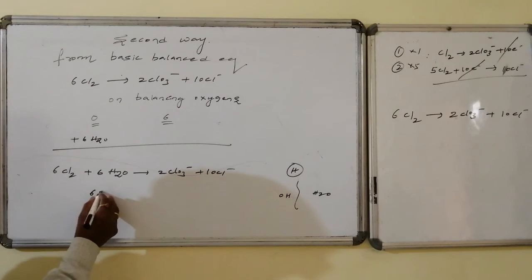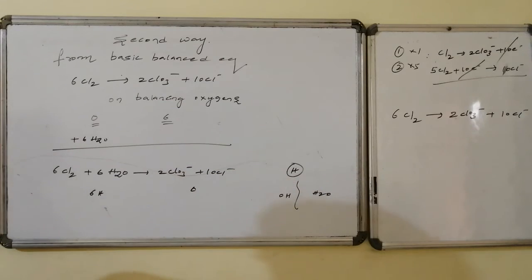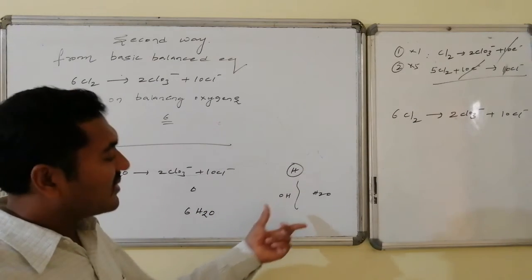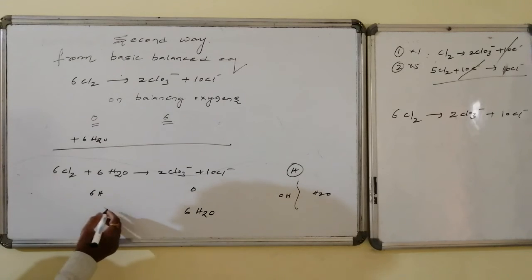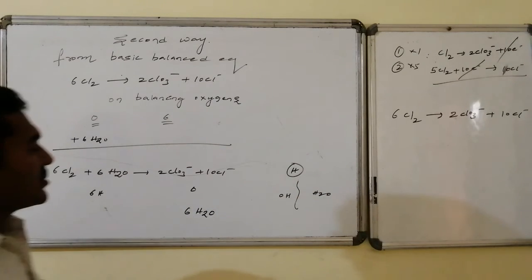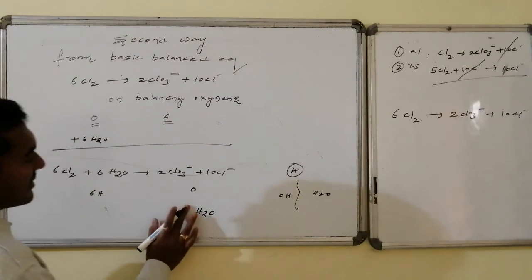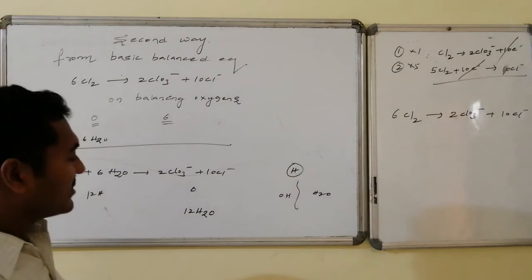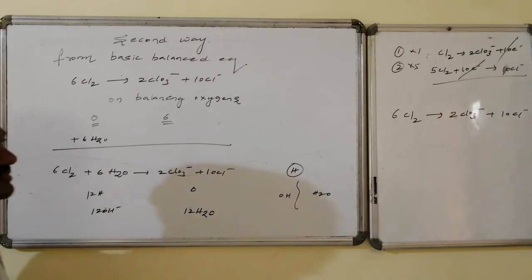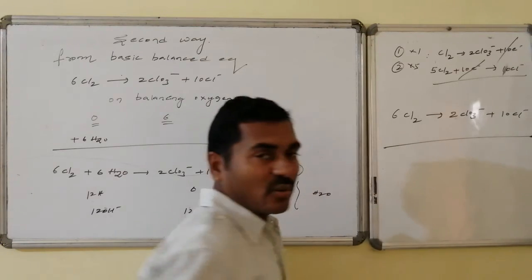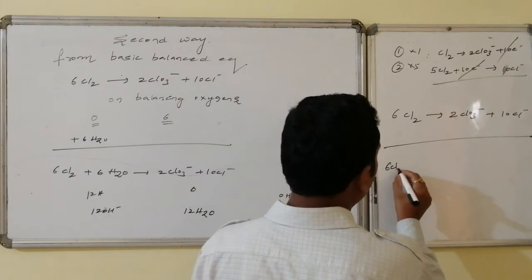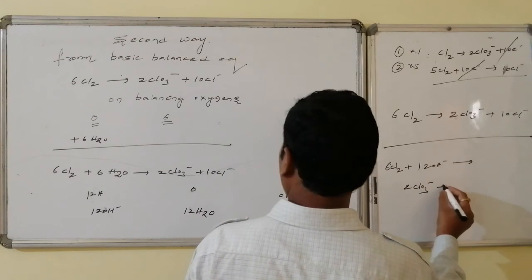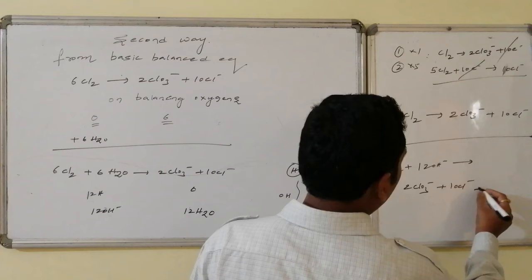Rearranging: 6Cl₂ + 6H₂O + 12OH⁻ becomes, after combining water terms: 6Cl₂ + 12OH⁻ → 2ClO₃⁻ + 10Cl⁻ + 12H₂O. Wait — consolidating: adding 12 OH⁻ to the left and 12H₂O to the right gives the balanced ionic equation: 6Cl₂ + 12OH⁻ → 2ClO₃⁻ + 10Cl⁻ + 6H₂O. This confirms the same result as the first method.